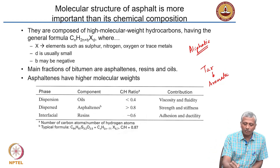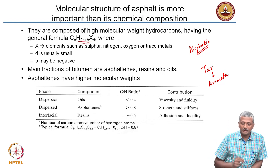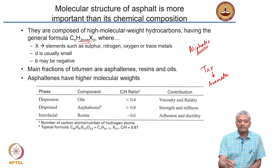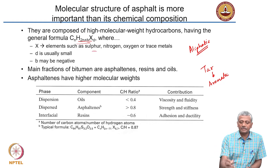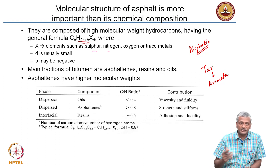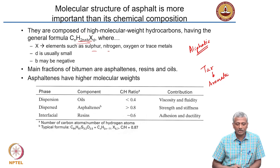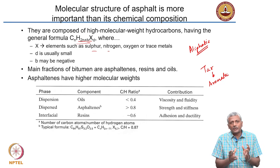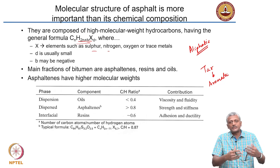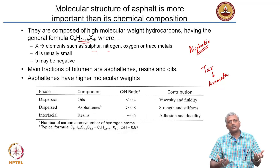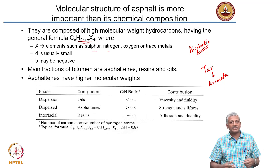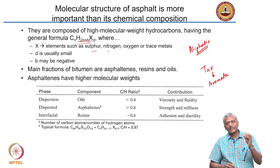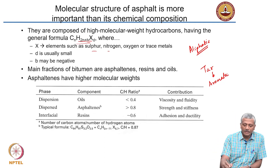This is a general formula of asphalt. You can have elements like sulfur, nitrogen, oxygen, or trace metals in the structure of the hydrocarbon itself. Asphalt is not as uniform as it looks; it has a lot of features that need to be carefully examined to really understand the composition of the asphalt or bitumen.